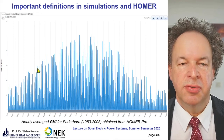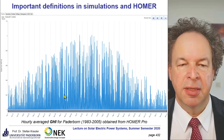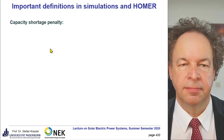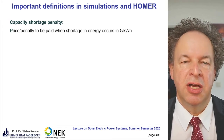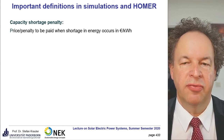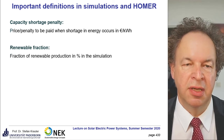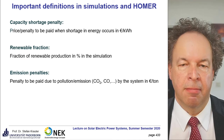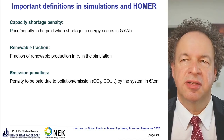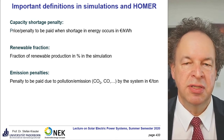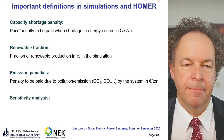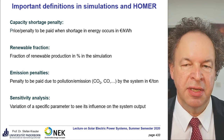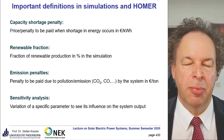The GHI for Paderborn shows a general seasonal change but also high daily variation depending on weather conditions. The capacity shortage penalty means you pay a fee for each kWh you don't deliver. The renewable fraction is the fraction of renewable production in the simulation. Emission penalties will be introduced — starting at 25-30 euros per ton of CO2 increasing to 55 euros in coming years. Sensitivity analysis is also very interesting: you can vary a specific parameter — inclination of a PV module or battery size — and see the technical and financial influence on the system output.